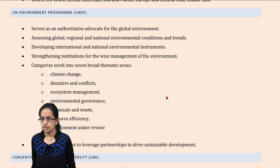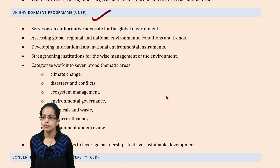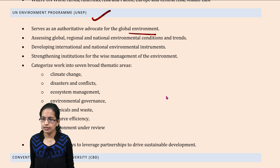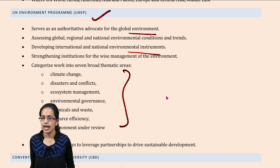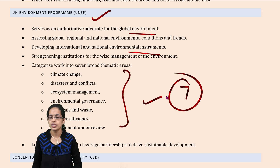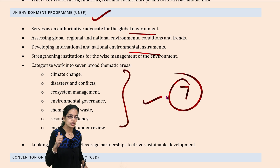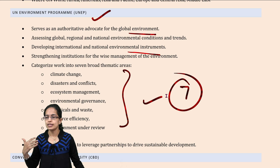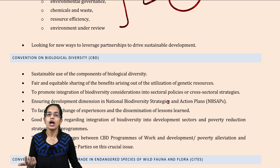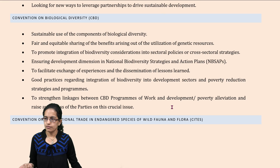The first is the UNEP, that's the United Nations Environmental Program. It focuses on global environment protection and environmental institutions. There are seven themes that are important — these deal with climate change, ecosystem management, environment under review, and chemical waste.